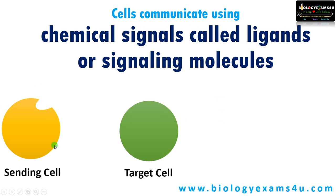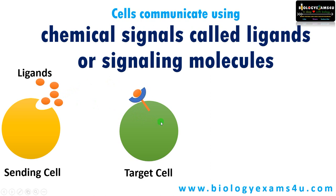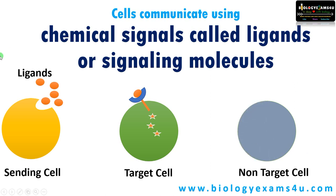Suppose this is a sending cell. This sending cell releases chemicals which are called ligands or signaling molecules. A target cell has a receptor specific for this ligand. The ligand binds to the receptor on the target cell. This receptor is activated, activating many chemicals inside, leading to a cellular response like cell division, cell differentiation, cell growth, etc. by gene expression. In the case of a non-target cell, this ligand has no effect as the receptor is absent.